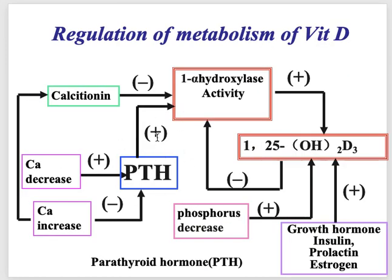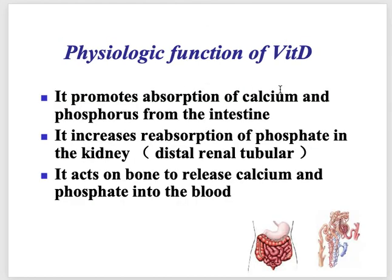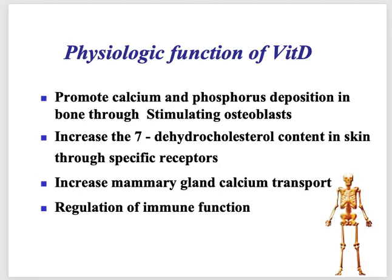Vitamin D is regulated by parathyroid hormone. Its functions include: promoting absorption of calcium and phosphorus from the intestines; increasing reabsorption of phosphate in the kidney; acting on bone to release calcium and phosphate into the blood; promoting calcium and phosphorus deposition in bones by stimulating osteoblasts (the bone-building cells); increasing 7-dehydrocholesterol content in the skin through specific receptors; and regulating immune function.